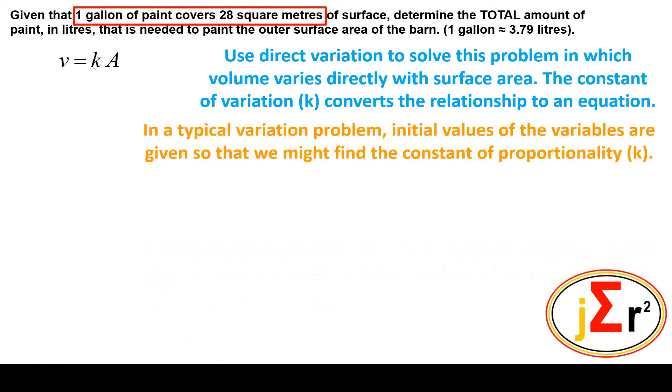In a typical variation problem, initial values of variables are given so that we might find the constant of proportionality k. Typically, when we have a direct or inverse variation problem, one of the first steps would be to give us initial values of A and V, or the two variables that are related to each other, in order that we may find the constant of proportionality. And we have them right there.